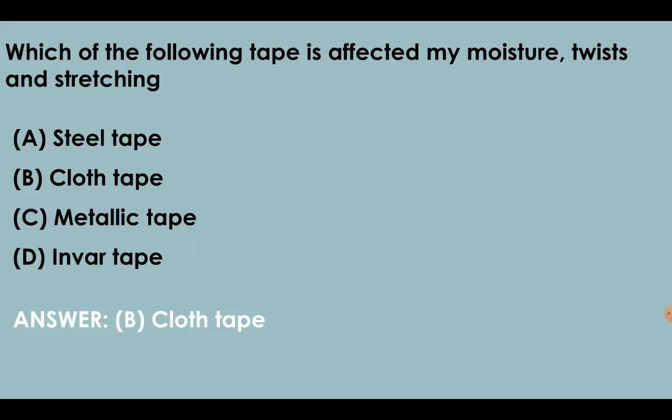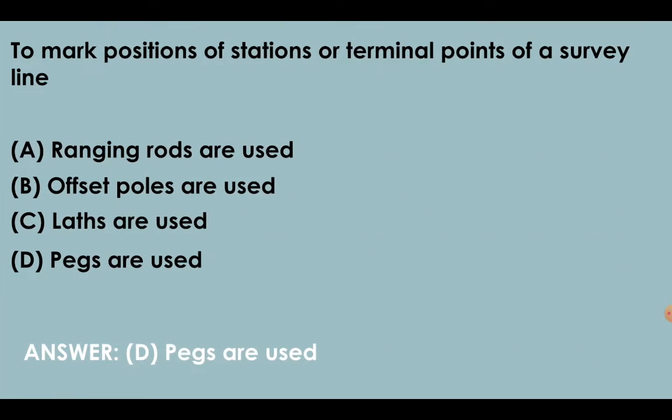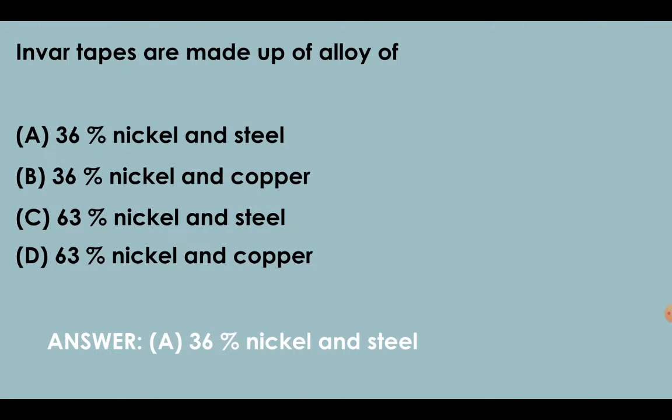Which of the following tape is affected by moisture, twist, and stretching? It is cloth or linen tape. Ranging pole has a large flag at its top. To mark position of stations or terminal points of a survey line, we use pegs. Invar tapes are made up of an alloy of 36 percent nickel and steel.